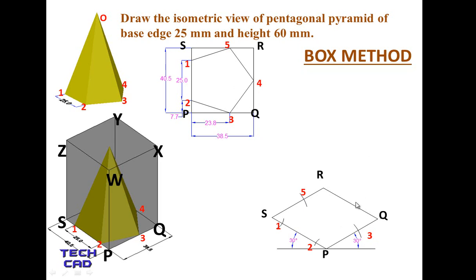Point 4 is exactly at the midpoint of RQ, so no compass is needed — just mark the midpoint as point 4. Now join all the points: 1 to 2, 2 to 3, 3 to 4, 4 to 5, and 5 to 1. This completes the pentagonal base.